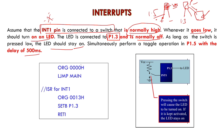ORG 0000H — that means I am telling the assembler to start. LJMP main — we are skipping the interrupt vector table. We need to start the main program from 0030H, because those addresses are allocated for interrupts. Once you execute this instruction, it will go to the label main.